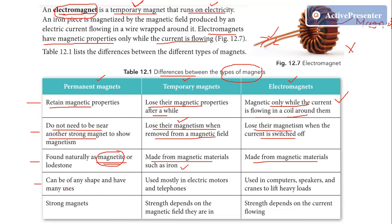The fourth difference is about shape and uses. Permanent magnets can be of any shape and have many uses and applications. Temporary magnets are used mostly in electric motors and telephones. Electromagnets are used in computers, speakers, and cranes to lift heavy loads — for example, cranes use electromagnets to lift cars.